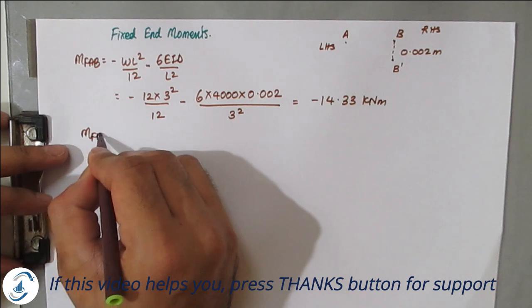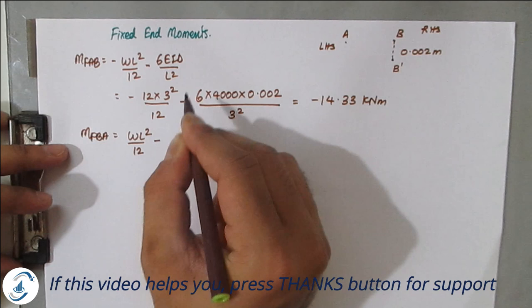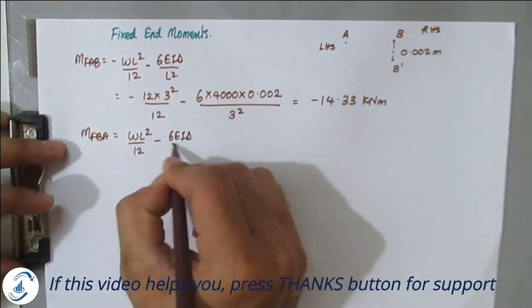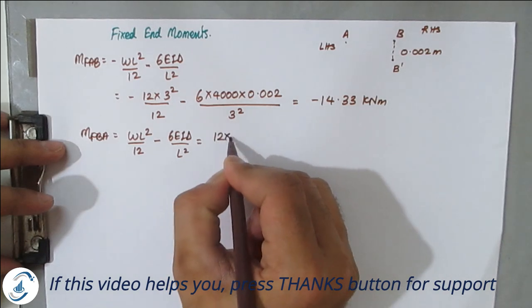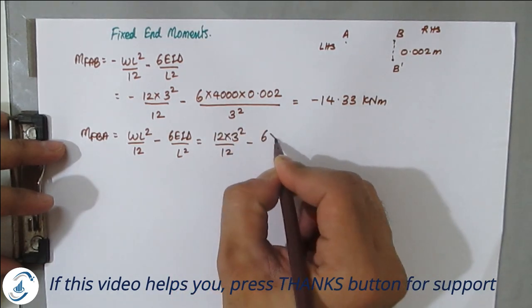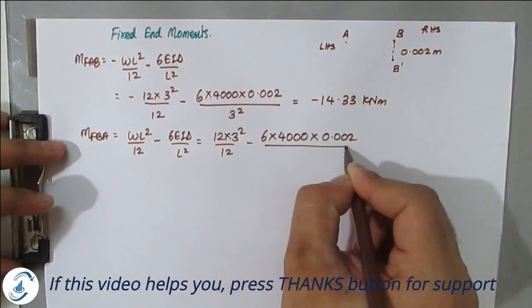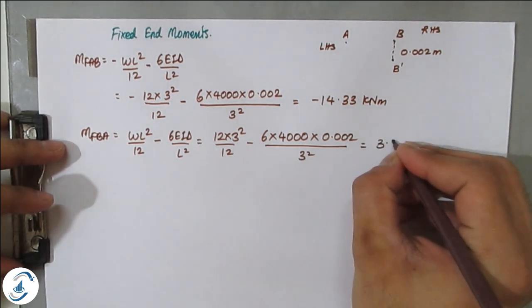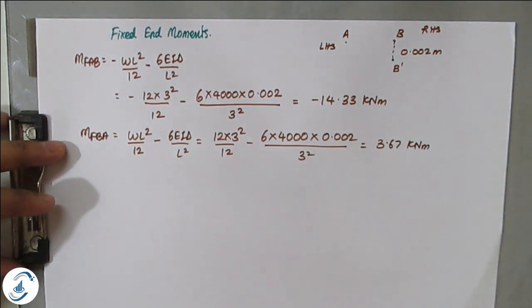MF_BA = +wL²/12 − 6EIδ/L². The sink term keeps the same negative sign. Substituting: 12×3²/12 − 6×4000×0.002/3² = 3.67 kN·m.